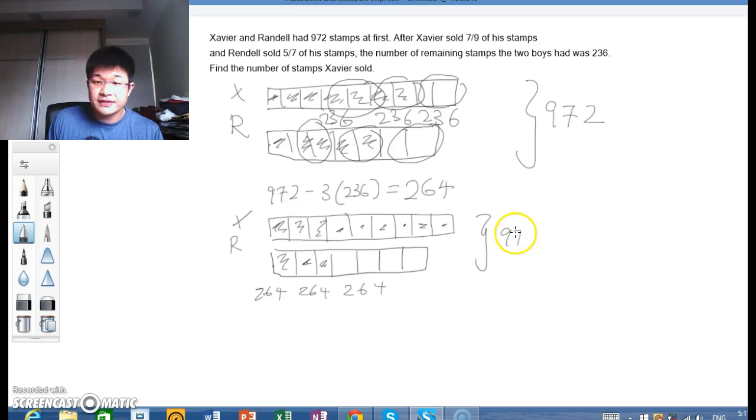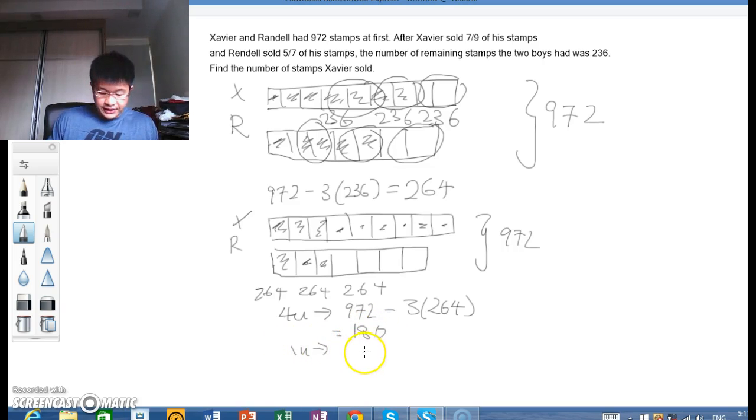Again, the total doesn't change. It's 972. So these remaining four units would simply be 972 minus 3 times 264, which gives us 180. And one unit would therefore be 45.